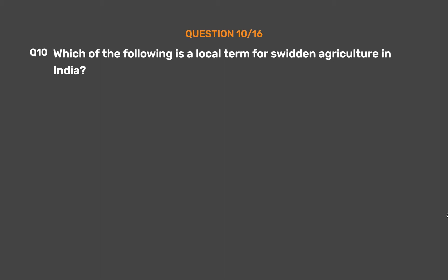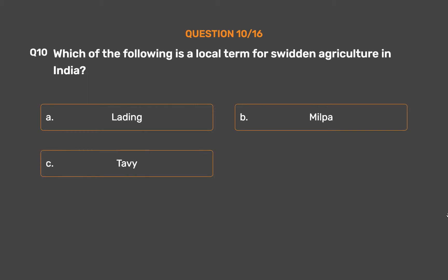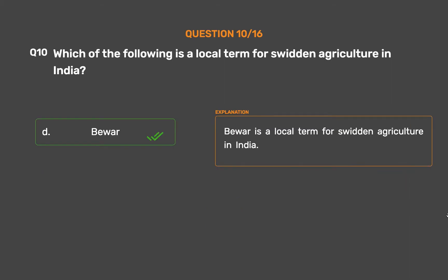Question 10: Which of the following is a local term for swidden agriculture in India? The correct answer is Option D: Bevar. Bevar is a local term for swidden agriculture in India.